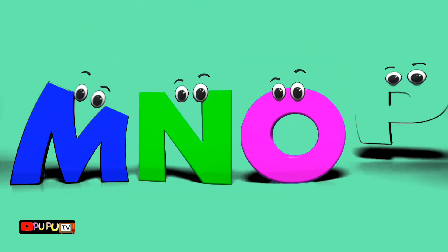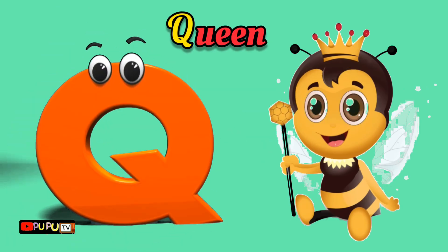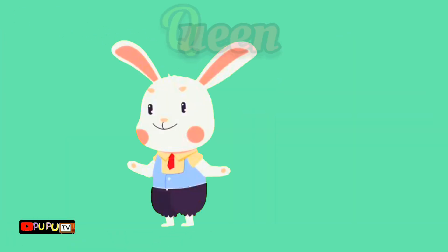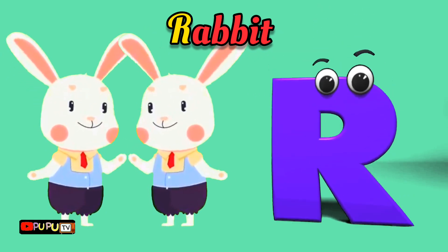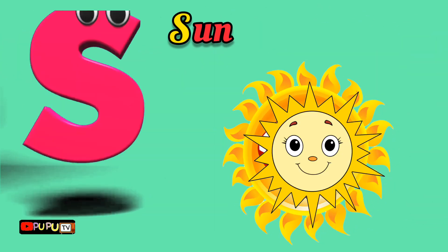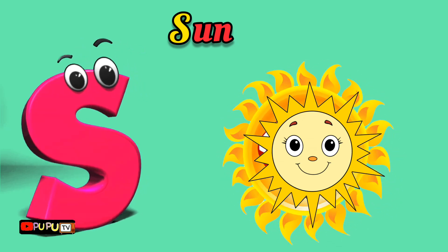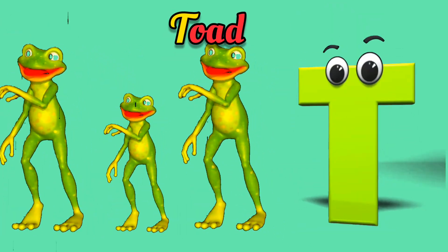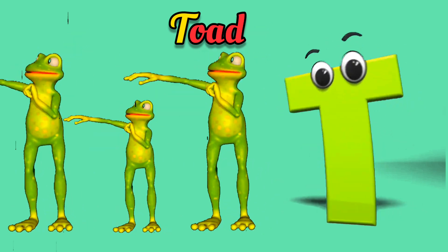Q is for Queen, Q-Q-Queen. R is for Rabbit, R-R-Rabbit. S is for Sun, S-S-Sun. T is for Toad, T-T-Toad.